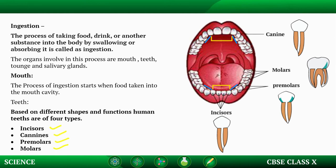Premolars are present two on each side of the canines in each jaw. Premolars help in crushing and grinding the food.